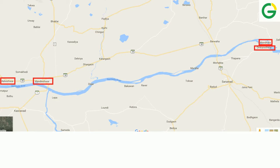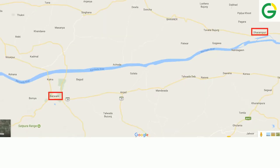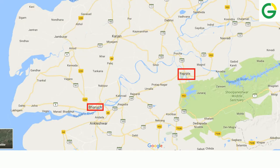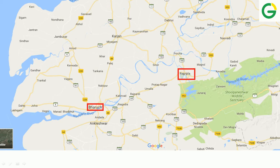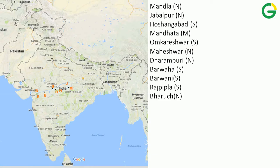This is Mandhata — Mandhata is an island, so it is neither a left bank city nor a right bank city. It is in the middle of the river. Omkareswar is on its left bank, while Maheshwar and Mandlaeswar are on its right bank. Dharampuri is on the right bank and Barwani is on the left bank.